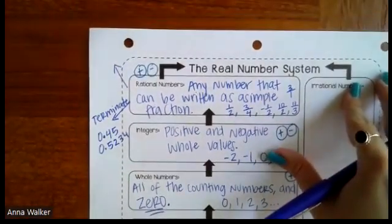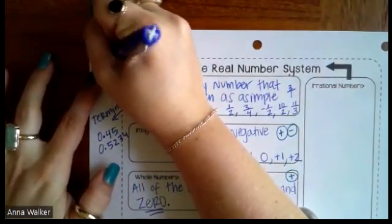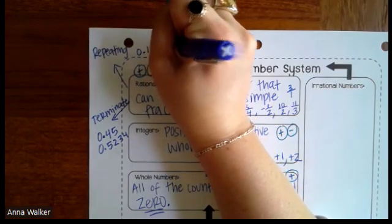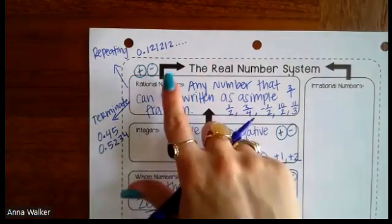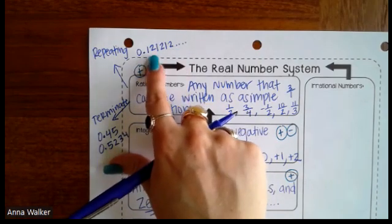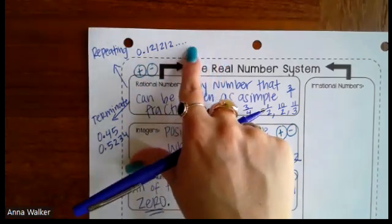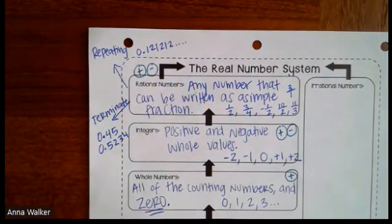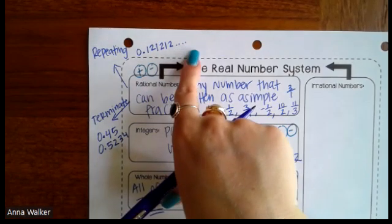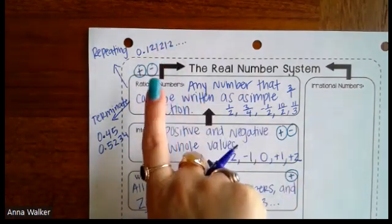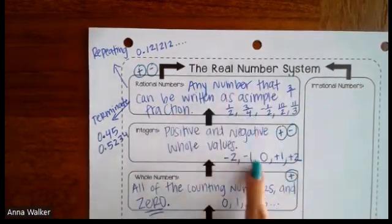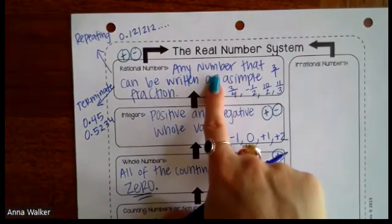The next kind of decimal that can be written as a rational number is a repeating decimal. A repeating decimal has some sort of pattern — for example, 0.121212... going on and on. It could be the same number repeated, like 0.33333..., or a repeating sequence like 145145145... They will typically have a dot dot dot indicating the pattern continues. These decimals can be rewritten as simple fractions. So whether it's a terminating or repeating decimal, or any simple fraction including integers and whole numbers written over one, it is classified as a rational number.